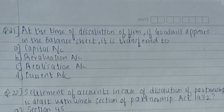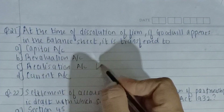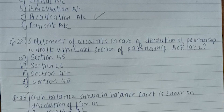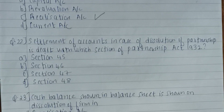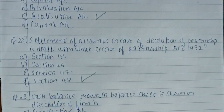Twenty-first question: at the time of dissolution, if goodwill appears in the balance sheet it is transferred to which account? Whenever goodwill appears in the balance sheet it is always transferred to the realization account. The answer is realization account. Twenty-second question: settlement of accounts in case of dissolution of a partnership firm is dealt with in which section of the Partnership Act of 1932? The answer is Section 48. Just remember the section number.